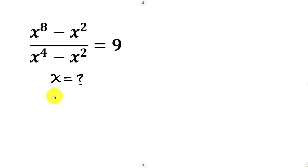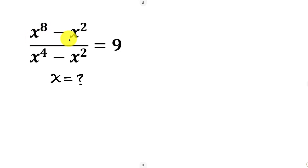What's going on everybody? Welcome back to the channel. We have this interesting question that says find all values of x that satisfies x to the power of 8 minus x squared, all over x to the power of 4 minus x squared, equal to 9.